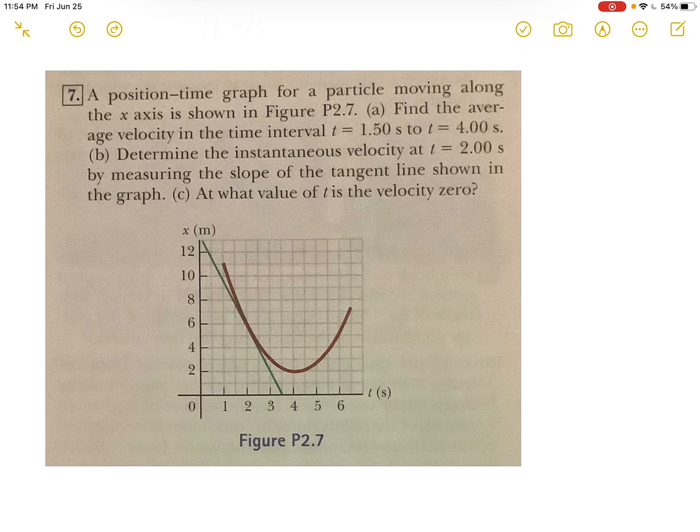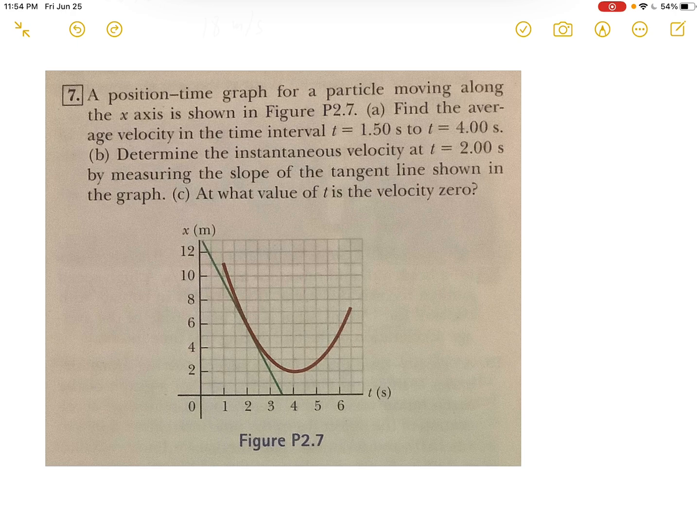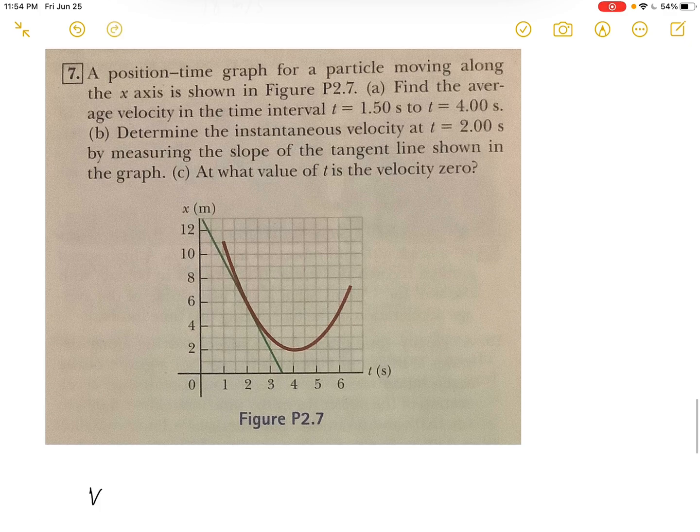Hey everyone, today we're going to solve a physics problem. For part a, we need to find the average velocity in the time interval t = 1.5 seconds to t = 4.0 seconds. We will use the velocity average formula, which is delta x over delta t.